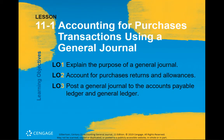In chapters nine and ten, you learned how to do transactions and special journals. Purchases of merchandise on account go in the purchases journal, and anything you pay cash for goes in the cash payments journal. In chapter ten, when you did a sale on account, that goes in the sales journal, and anytime you receive cash, that goes in the cash receipts journal.